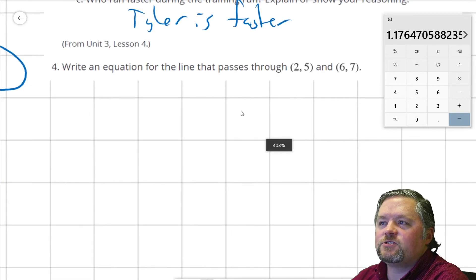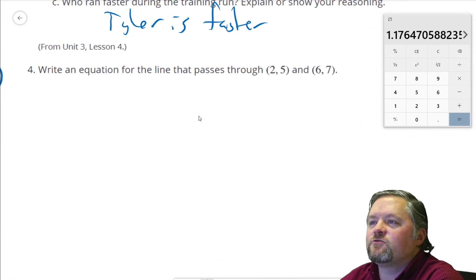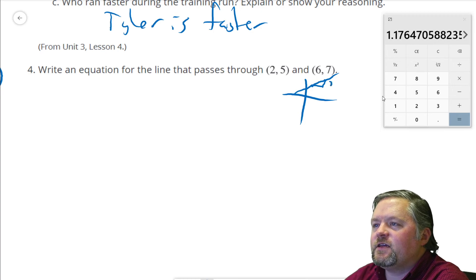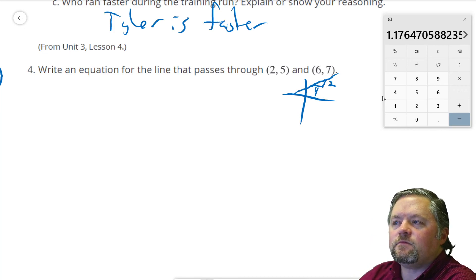This looks like our last question for today. Write an equation for the line that passes through (2, 5) and (6, 7). I'll be nice and sketch this out quickly. 2, 5 is something like that. 6, 7 is something like that. What's this going to look like? Our rise from 5 to 7 is 2. And our run from 2 to 6 is 4. That means our slope, I'll call M is 2 over 4, which is 1 over 2. If our slope is 1 half...